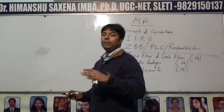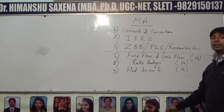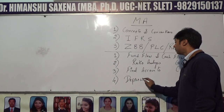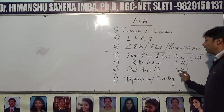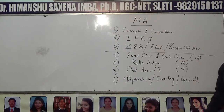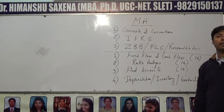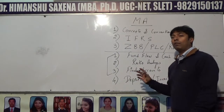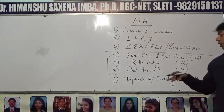So the core topics of management accounts are fund flow, cash flow, ratio analysis, and final accounts. Beyond these, you might also get a small practical on depreciation, inventory related to FIFO, or valuation of goodwill. These secondary topics could appear as a 7-mark practical in the examination, so master the core three along with keeping some hold on depreciation, inventory, and goodwill.